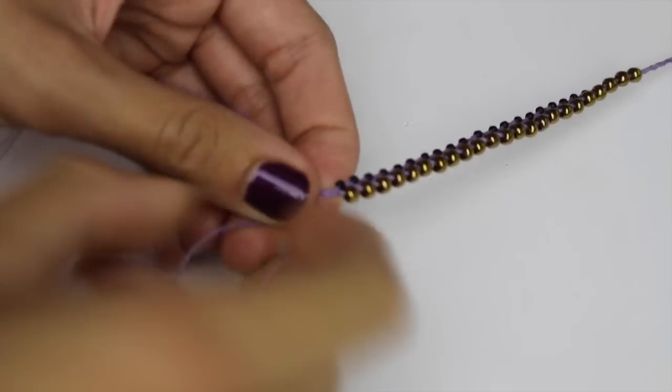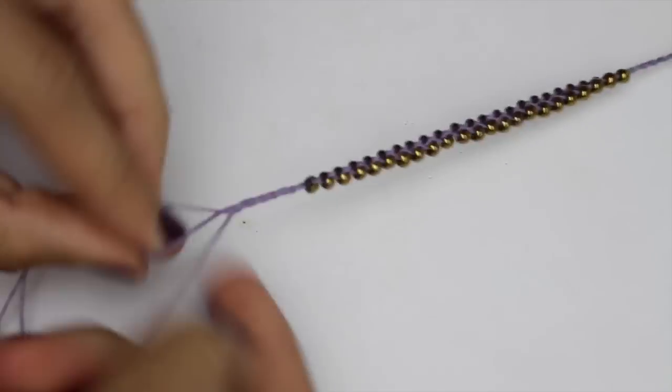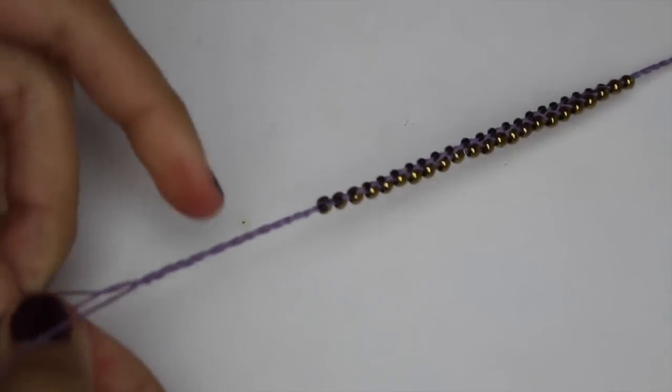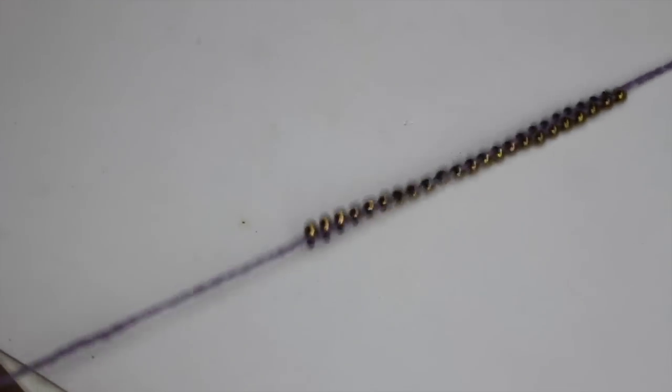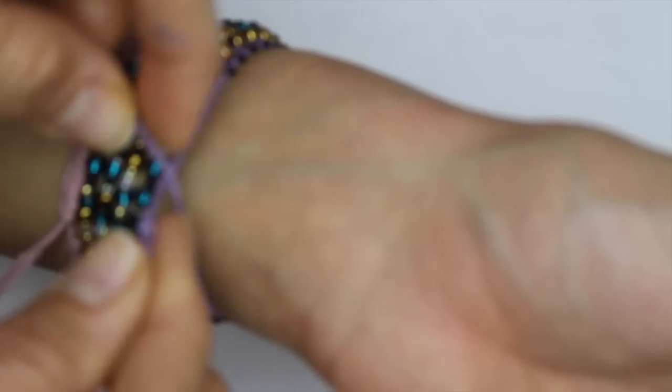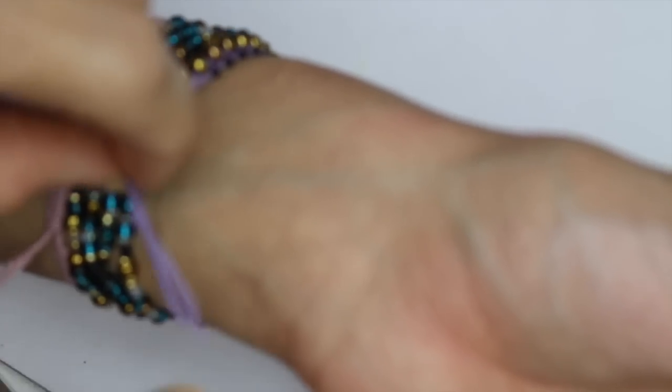There's a bunch of ways to end this. You can add a clasp or you can use the method that we use for the other one so it's adjustable, but I just decided to tie this on my wrist as is, and so it was one of those bracelets that you would just leave on even when you shower and everything, and it would just fall off naturally.